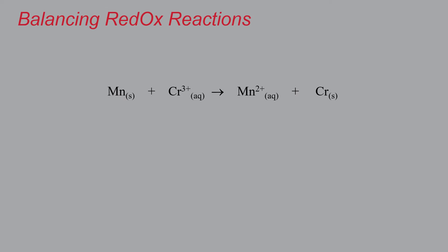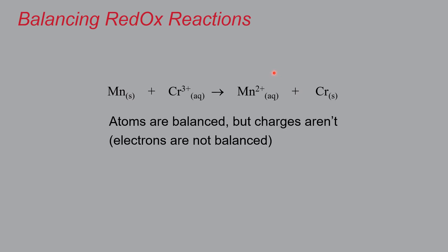Let's review the tenets of balancing reactions — this is review from first semester. Consider this equation: is it balanced? Hopefully you said no. While it is atom balanced — one magnesium, one magnesium, one chromium, one chromium — it is not charge balanced. The overall charge on the reactant side is plus three and is plus two on the product side. So the electrons are out of whack.